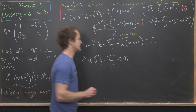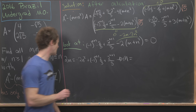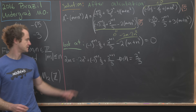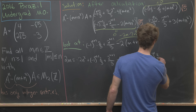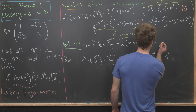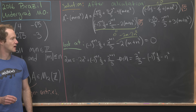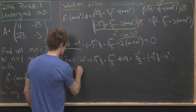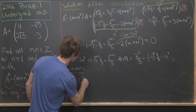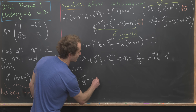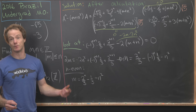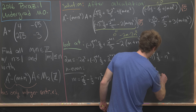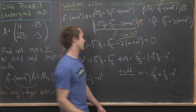Dividing by 2 gives m in terms of n: m = 2ⁿ/3 − (-1)ⁿ·(1/3) − n². This splits into two cases: if n is even, m = 2ⁿ/3 − 1/3 − n²; if n is odd, m = 2ⁿ/3 + 1/3 − n².